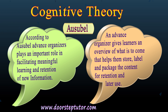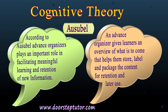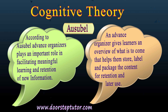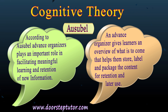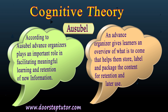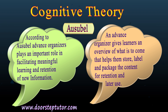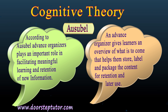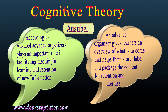Thus, here we finish the cognitive theory of learning. In this video we have learned that cognitive theory lays stress on Gestalt theory. This learning theory perceives the holistic perspective of the learning task, giving importance to perception of the whole, not the collective association of ideas as given by behaviorists.